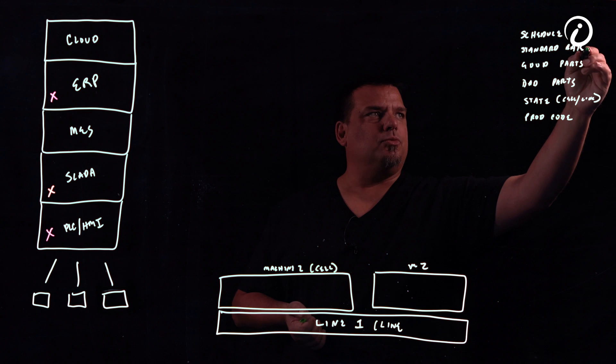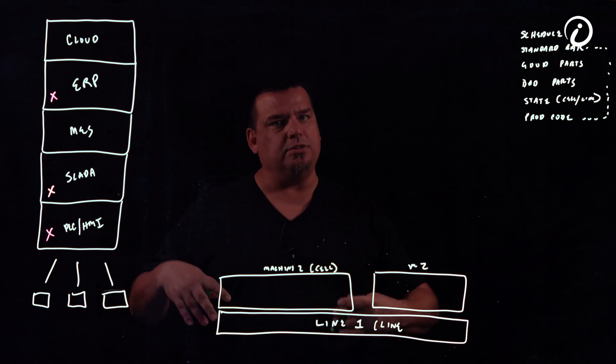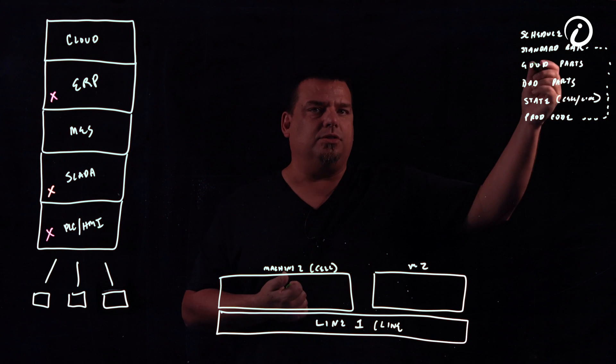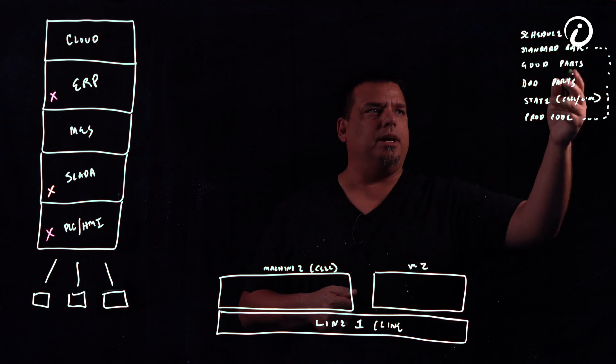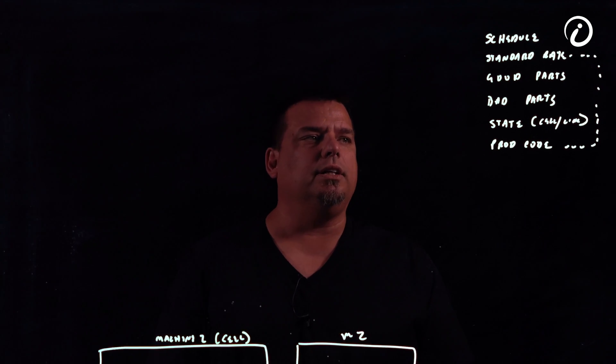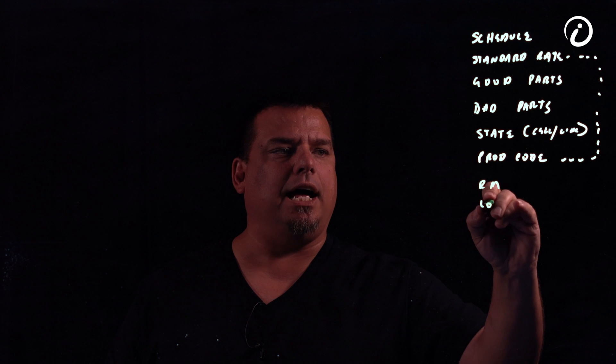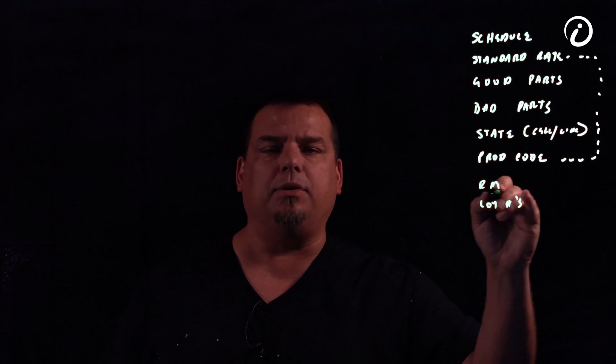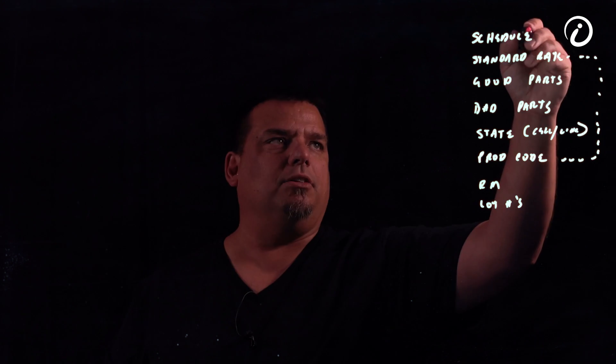So in the ISA 95 world, machine is considered a cell. And we want to see OEE by cell. And this is considered a line. So we want state, both cell and line state. Good parts, bad parts. We might want to know the product code. Here's why. Because most of the time, your rate, this rate here, might be tied to the product code. So when I'm producing product X, I should be producing at a certain rate.